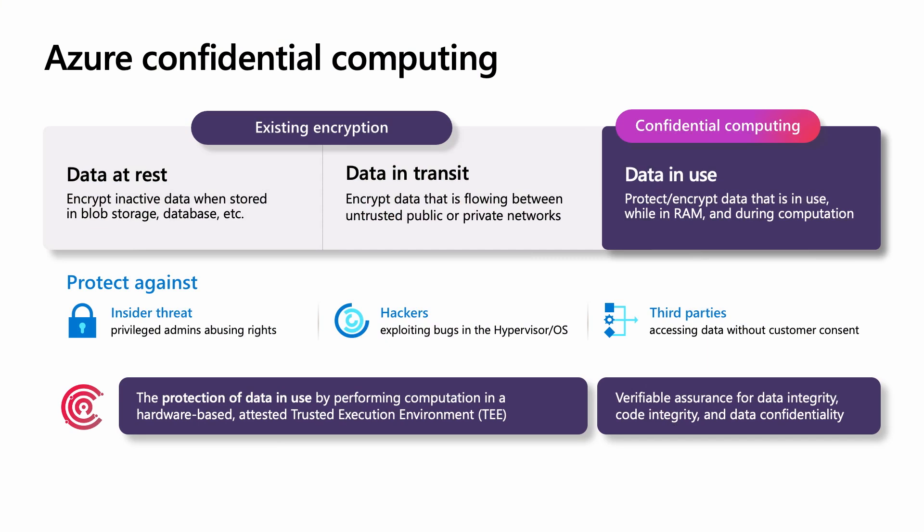First, let's recap a little on confidential computing. Data can exist in three forms: it's either at rest, it's in transit, or it's in use. The industry has standard encryption capabilities that help you protect your data at rest and in transit. However, data in use protections are still early in their implementation. Confidential computing's goal is to help address that missing piece of the puzzle, helping organizations further protect their data by encrypting it while it's in use.